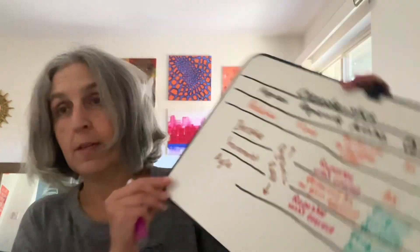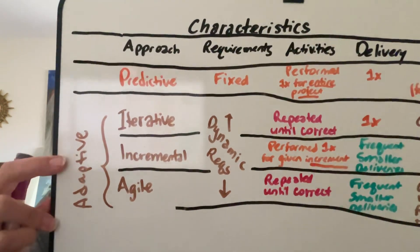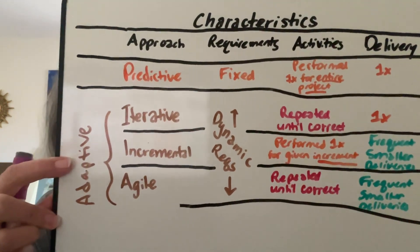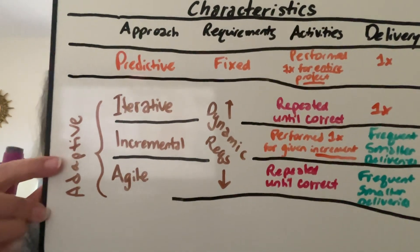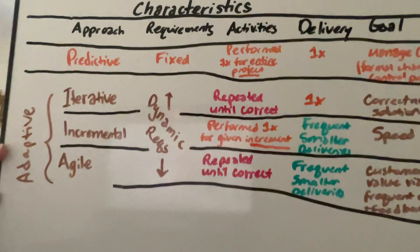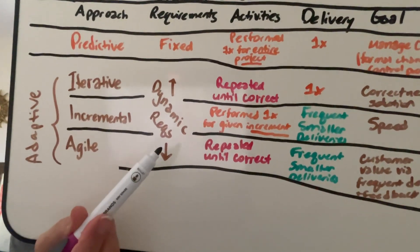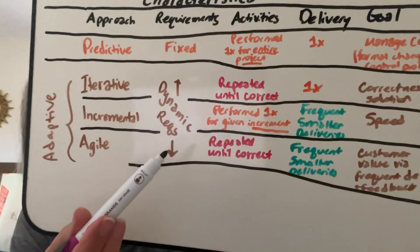So that's predictive. What you don't see in the chart on page 18, but I'll write in here, is that iterative, incremental, and agile are the adaptive approaches — for when we have dynamic requirements. Notice: dynamic requirements versus the fixed requirements we saw for predictive. You're going to pick from these based on what's really going on for you.